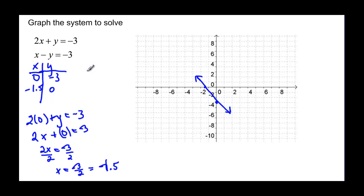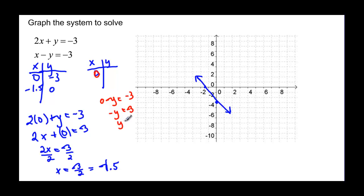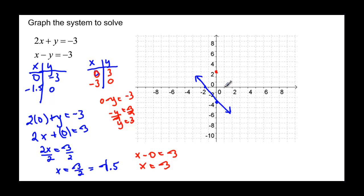Let's try the same thing for the other equation. We've got x and y — we're going to let x be zero. So now we have zero minus y is supposed to be equal to negative three. That tells us that negative y is equal to negative three, and y will be equal to three when we divide by negative one. So zero, three. And then if we let y be zero, we'll have x minus zero equal to negative three, so the x intercept is negative three, zero. So zero, three is the y intercept and negative three, zero is the x intercept.